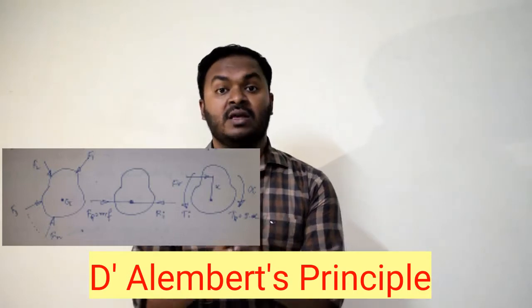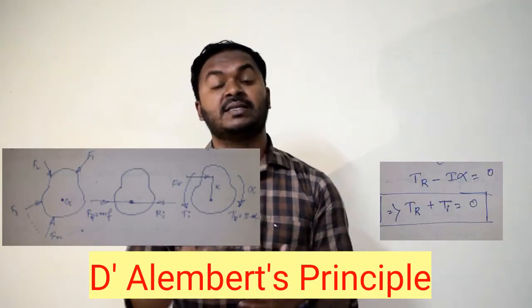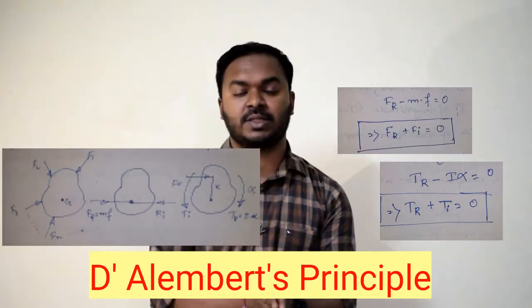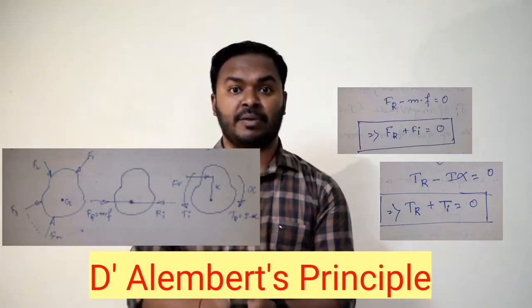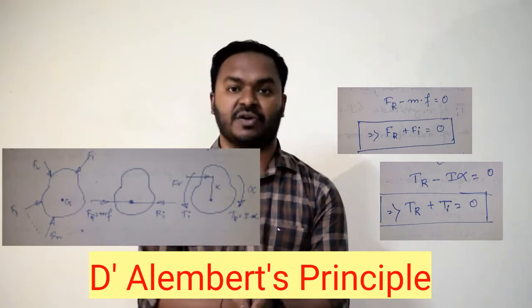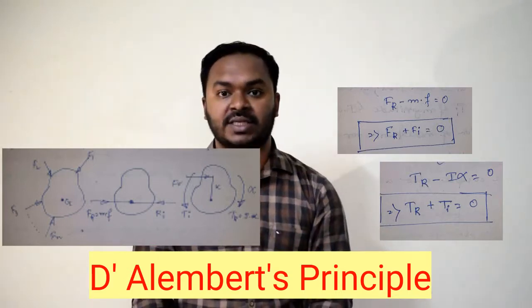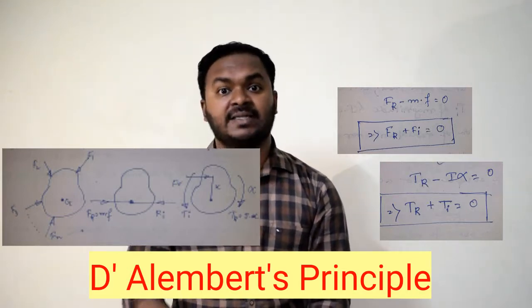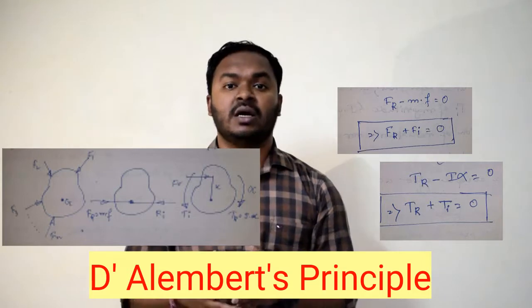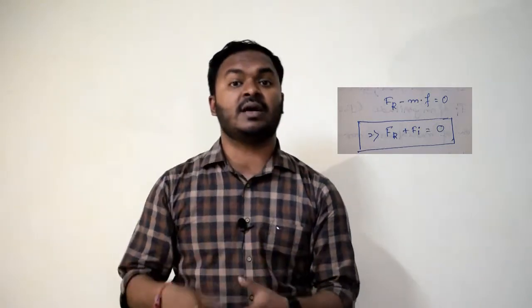The next definition needed is D'Alembert's Principle. It deals with two cases: when the resultant force acting on the body passes through the center of gravity (CG), and when it does not. If it passes through the CG, the body is brought into equilibrium by a force equivalent to the resultant but opposite in nature — that is the inertia force. In the second case, if the resultant force doesn't pass through the CG, it will try to rotate the body about the axis through the CG, and this accelerating couple is balanced using an inertia torque.